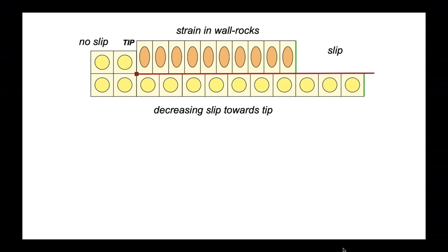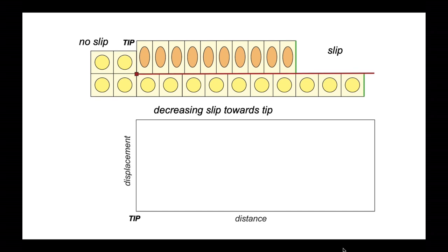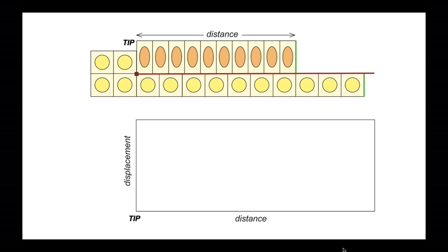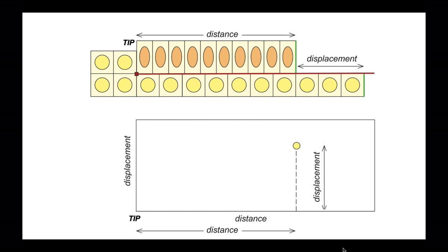And as a consequence, the rocks above the fault have become deformed — there's strain in the wall rocks. Let's plot up the relationships between displacement and distance from the tip. That's the distance from the tip to the right-hand side of the hanging wall marked by the green bar. The displacement of that marker is shown, because originally it all lined up on the right-hand side of the model. So we can plot these two values — the distance and the displacement — as a point on the graph.